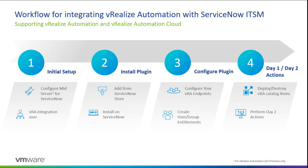In terms of the general workflow for integrating VRA with ServiceNow, we're looking at four or five different stages. Stage one is the initial setup, where we configure the MID server for ServiceNow — this is only required if you're integrating with VRA Automation on-prem — and also the creation of the VRA integration user that will be used when registering the VRA endpoint. In stage two, we install the plugin by first adding it to the ServiceNow instance from the ServiceNow store, and then installing it on the instance.